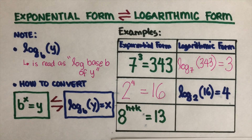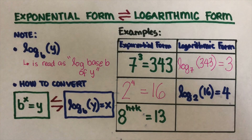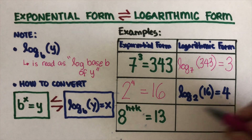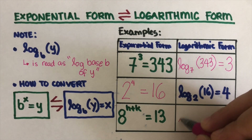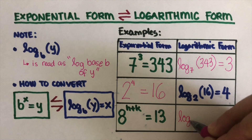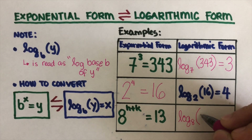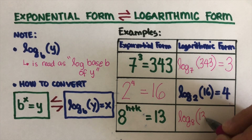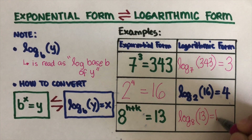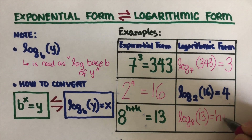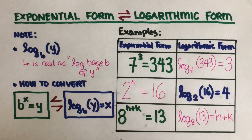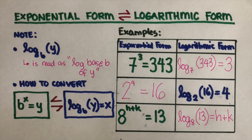Now, if we have an expression that looks like this, this would be log base 8 of 13 equals h plus k. We just have to rearrange it in order to change one form to the other.